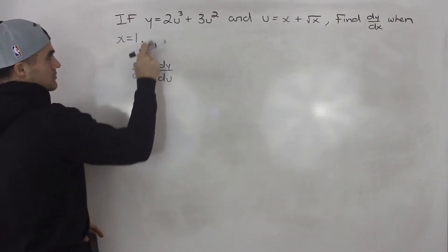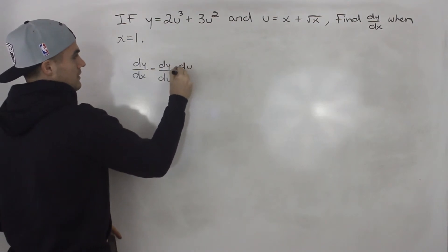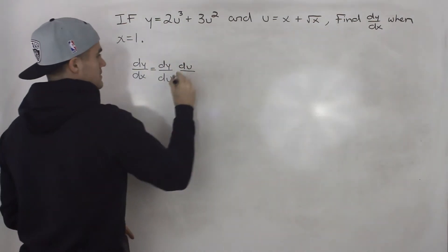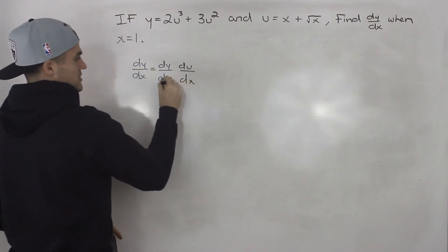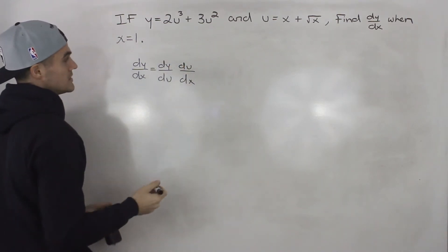So dy by dx, we know it's going to be dy by du times du by dx. It's almost like these du's here cancel out, and we end up with dy by dx.